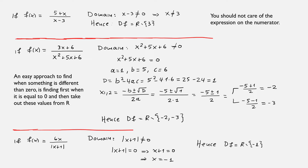A final example on fractions: let f(x) = 6x / |x + 1|. We need the denominator to be different than zero, so |x + 1| ≠ 0. Solving the corresponding equation |x + 1| = 0, that only happens when x = −1. Therefore, the domain is ℝ \ {−1}.